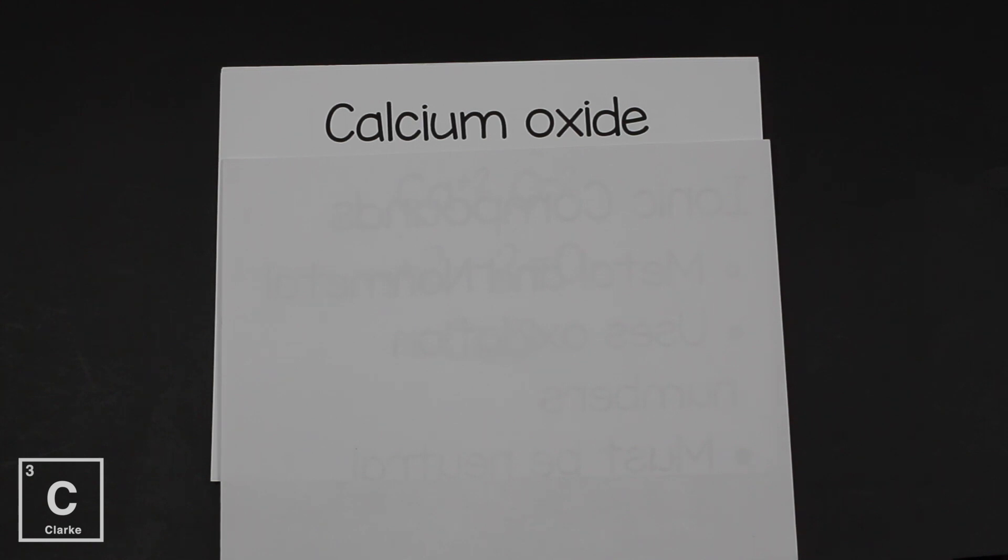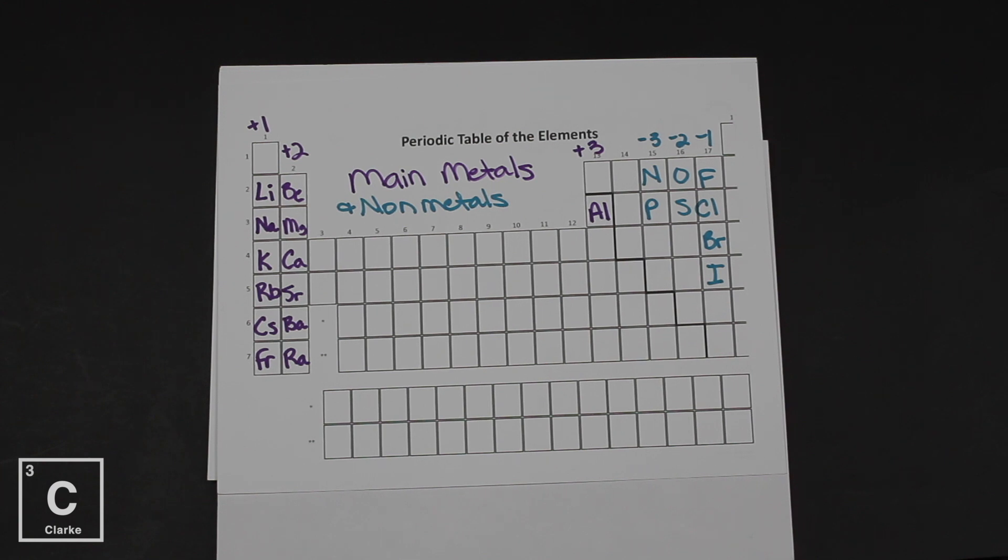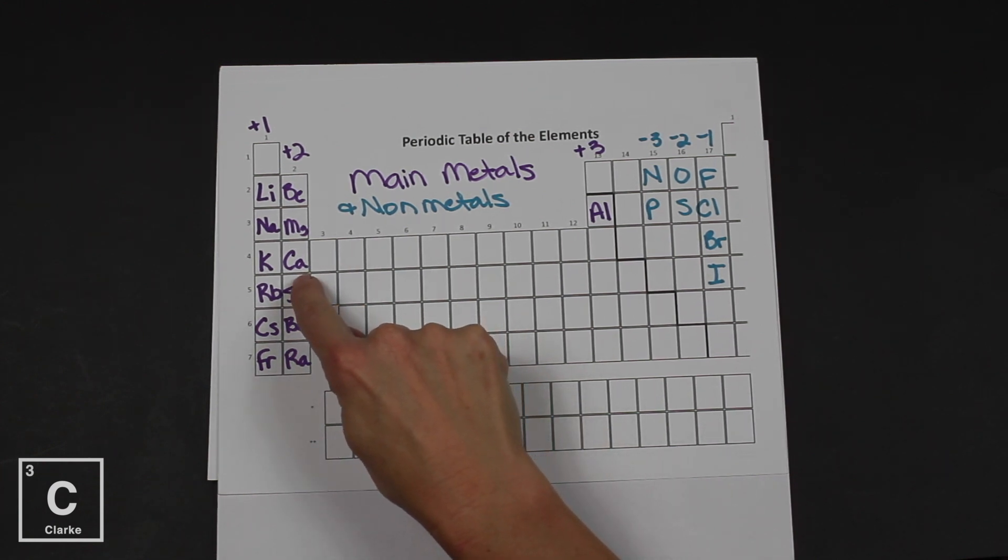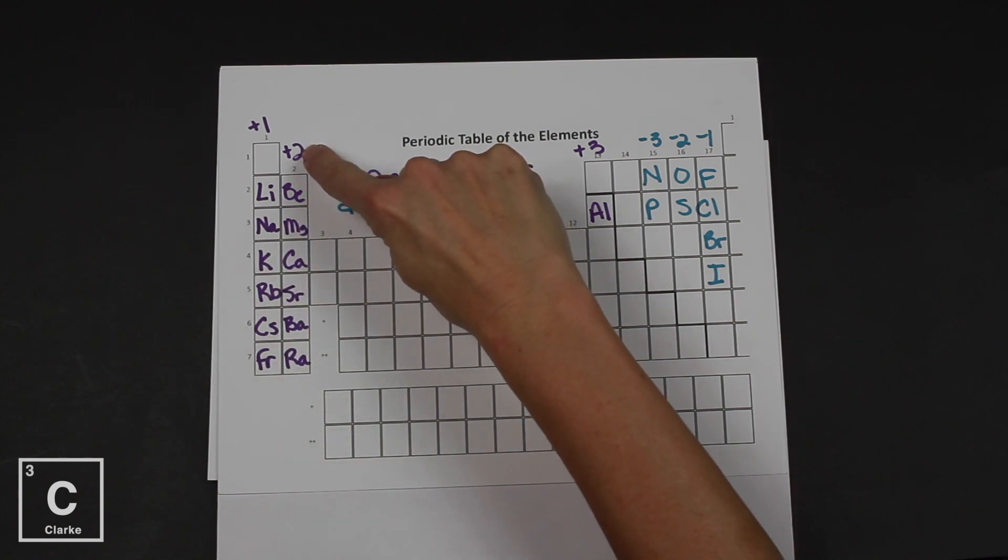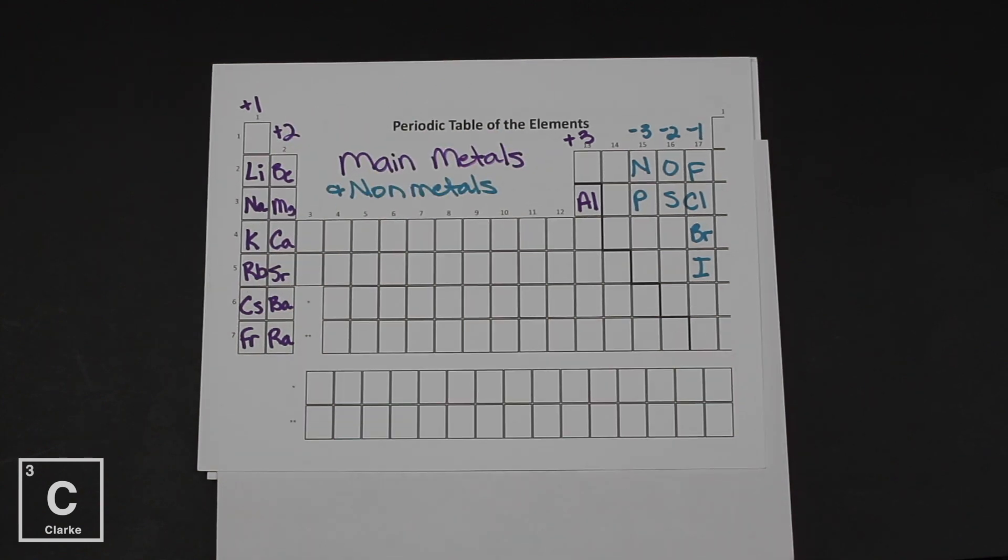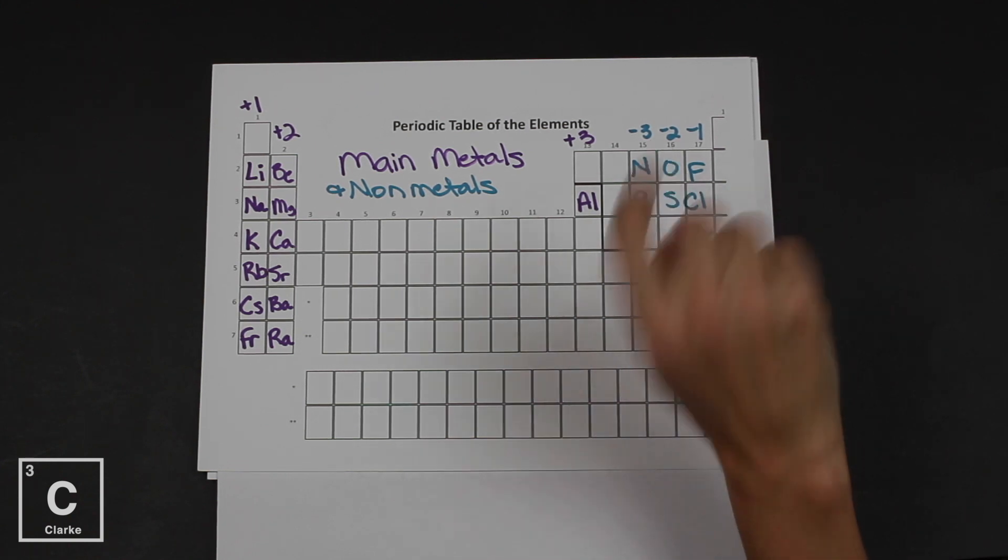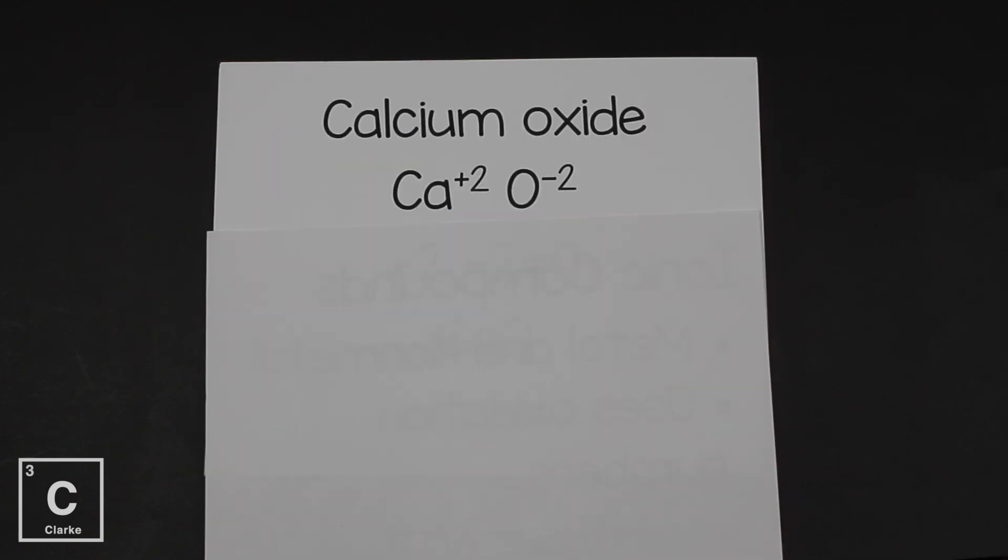So let's try our first one. Calcium oxide. Let's look at this on the periodic table. The first thing we should recognize is that calcium, that's a main group metal. It's a plus two. Oxide, that means oxygen. Oxygen is a minus two.